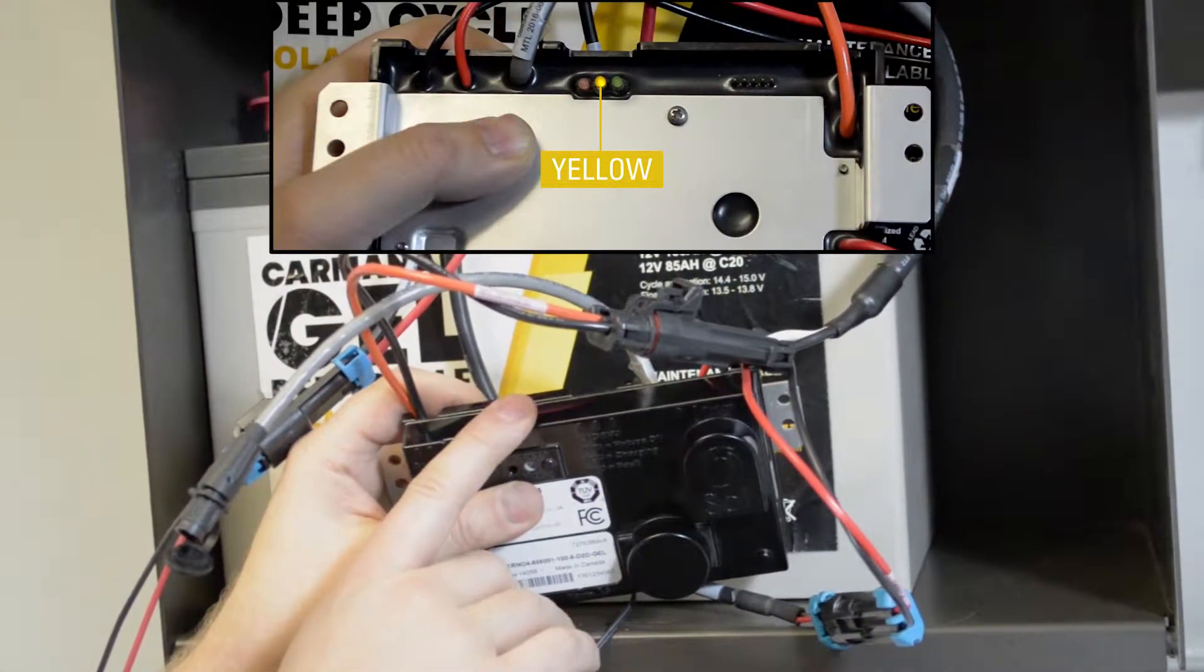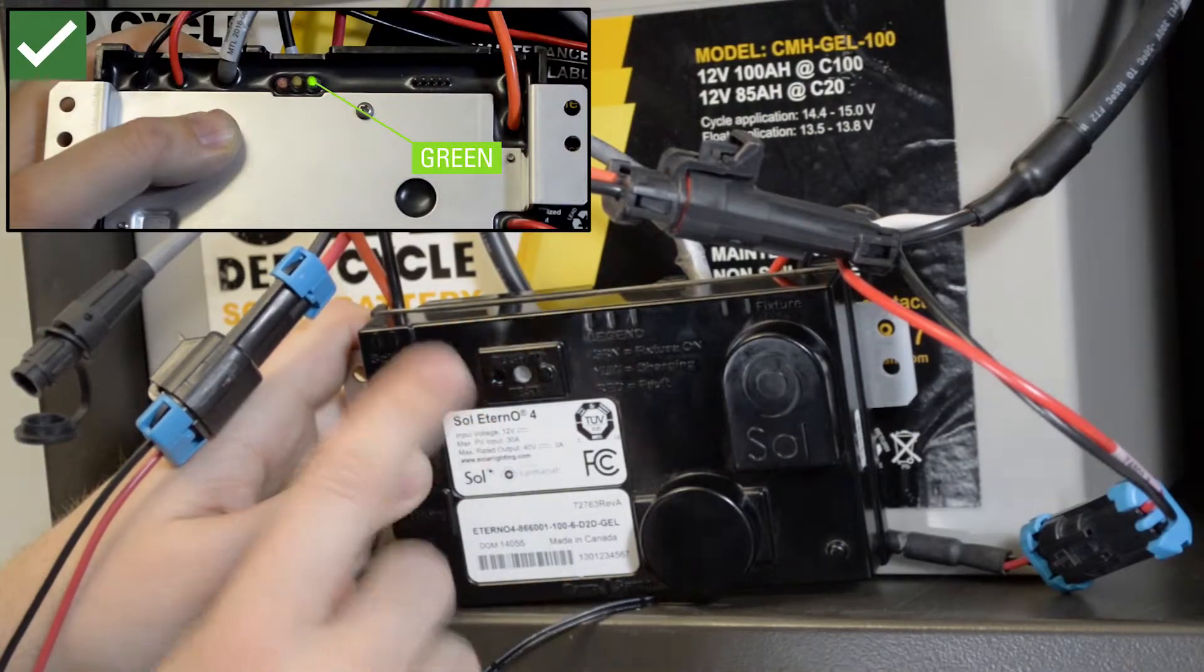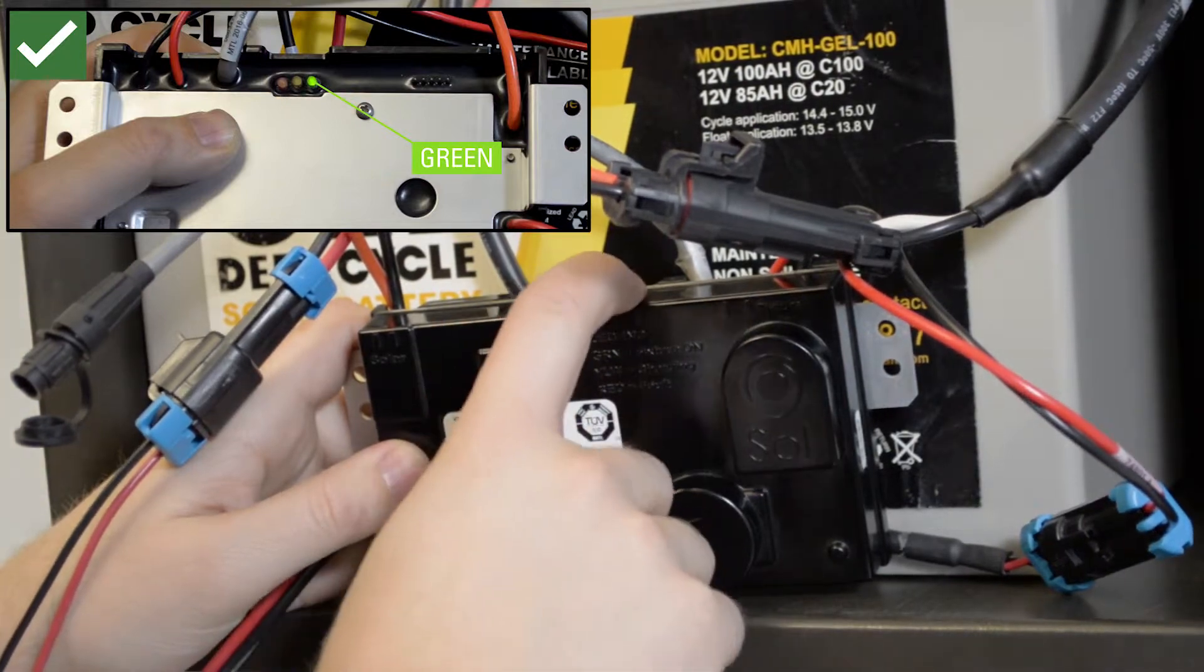During the daytime you should only see the yellow light indicating that it's in charge mode. If you don't, you may have issues with the panel connection, and we'll show you how to check that in a bit. When you push the test button, the fixture should turn on and you should see a green indicator light.